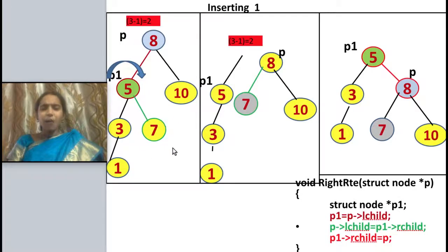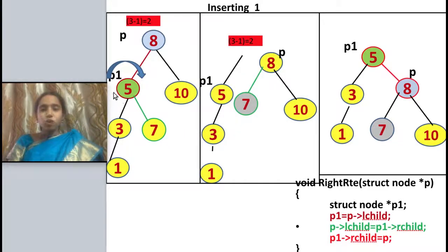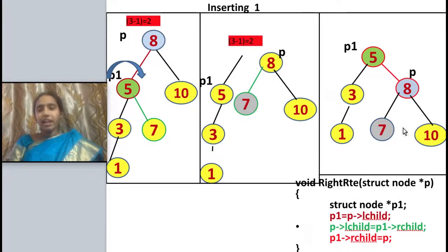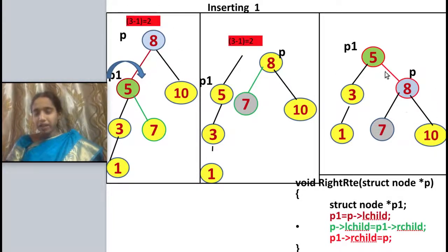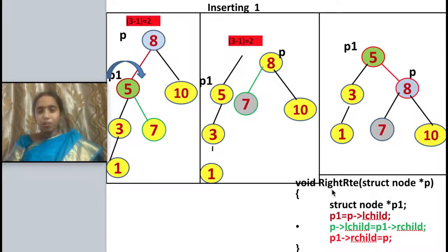This is a left-side unbalanced tree so I perform a right rotation between P and P1. Now, 8 would become the right child of 5, but 5 already has a right child — node 7. So I take that node 7 and make it the left child of P (node 8). If P1's right child is null, I directly rotate; otherwise I make P1's right child become P's left child, then attach P as P1's right child.